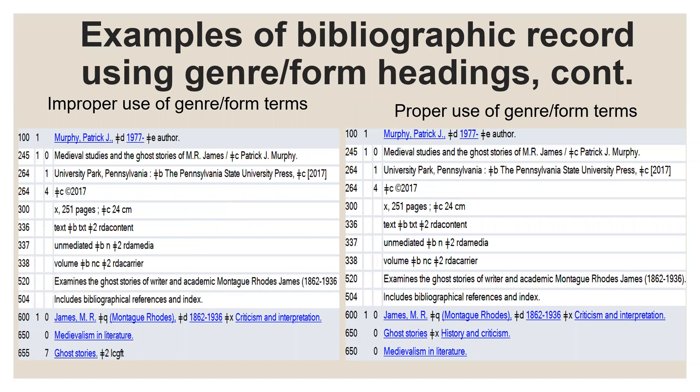Now we're going to see examples with the opposite effect. This is a book — Medieval Studies and the Ghost Stories of M.R. James — about the writing of ghost stories by M.R. James. It focuses on the intersection between his scholarly work and his fiction, arguing that his two careers are intricately intertwined, so it's a book about ghost stories and ghost story writing. Therefore, the record on the left is incorrect because this book is not a ghost story — it is about the writing of ghost stories. The record on the left clearly shows that the book is about the history of ghost stories and the critique of M.R. James' writing.